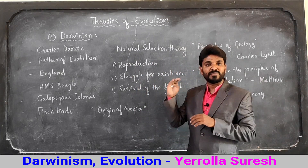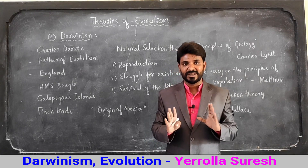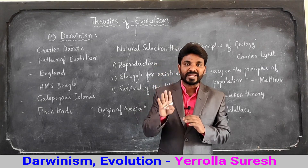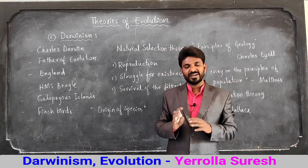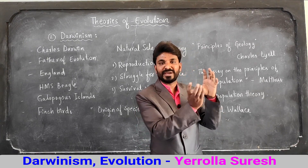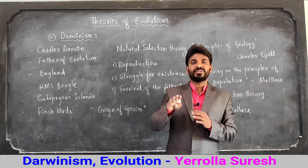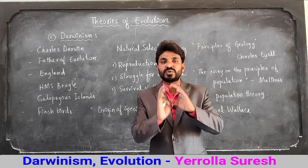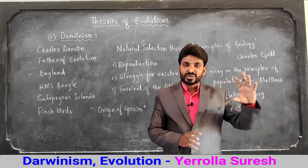After collecting information from these two books, Darwin finally proposed the natural selection theory. Natural selection means nature itself selects stronger organisms and eliminates weaker organisms from the surroundings. Darwin says that organisms having useful variations are selected by nature, and organisms not having useful variations are eliminated. The surviving organisms pass on their characters to the next generation.